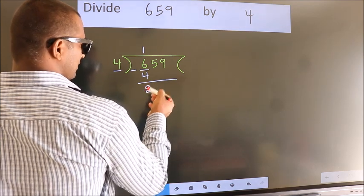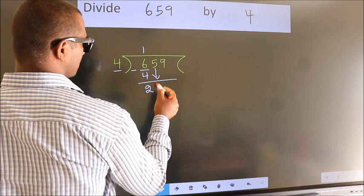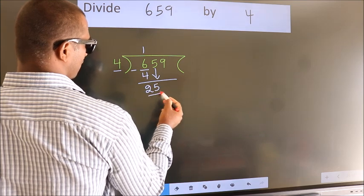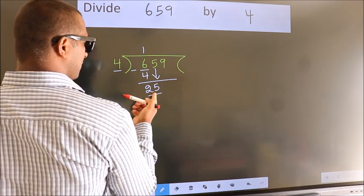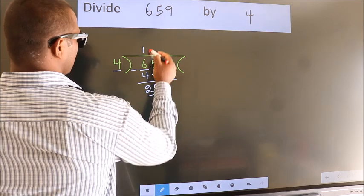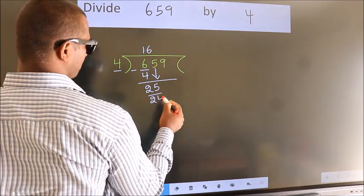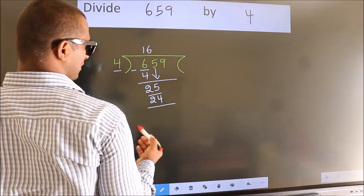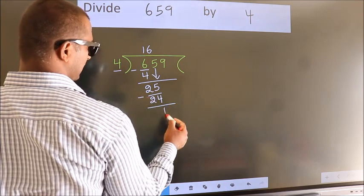After this bring down the beside number. So 5 down. So 25. A number close to 25 in the 4 table is 4, 6, 24. Now we subtract. We get 1.